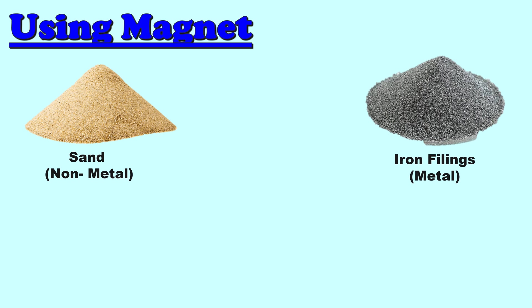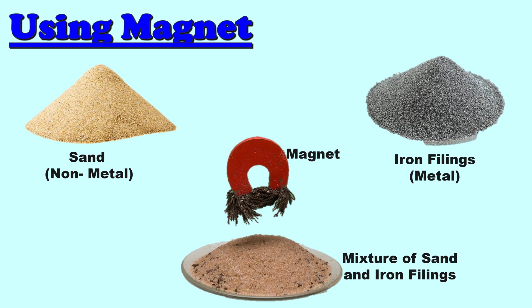One example of a mixture that can be separated using magnets is a mixture of sand and iron filings. When iron filings are mixed with sand, they form a mixture but keep their original properties. The iron remains magnetic while the sand stays non-magnetic. When a piece of magnet is placed over the mixture and moved about, the iron filings are attracted to the magnet, leaving the sand behind.